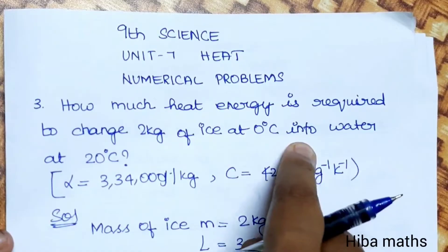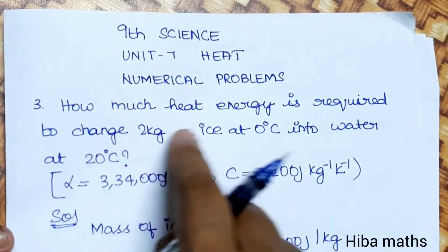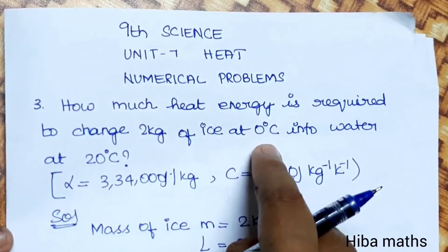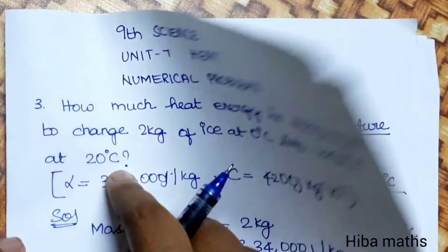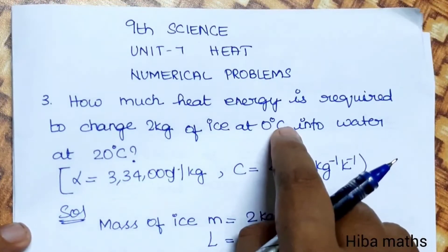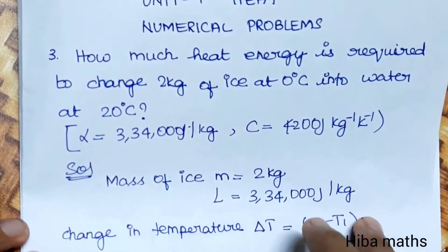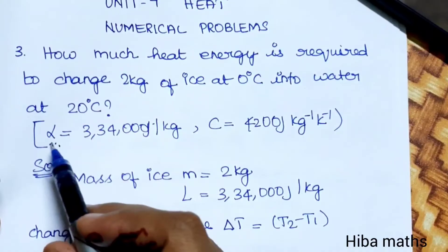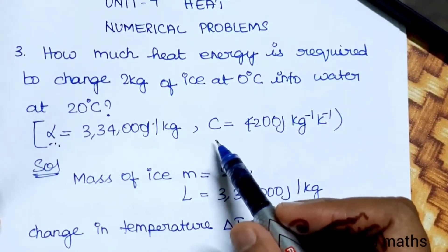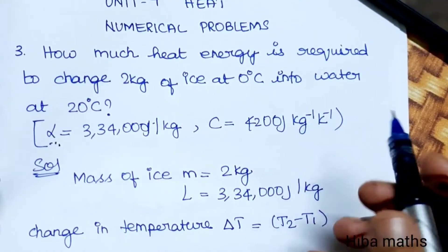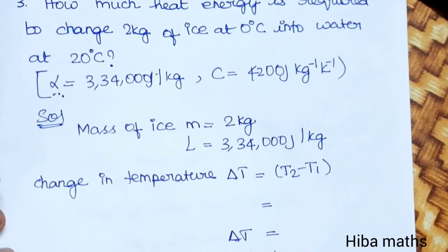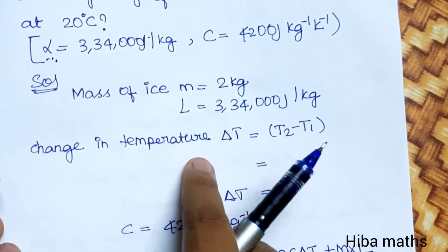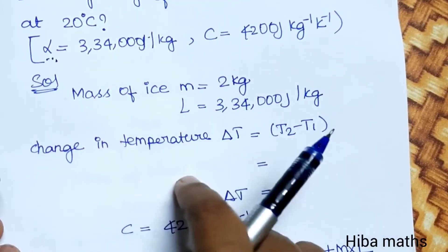Third question: how much heat is required to change 2 kg of ice at 0 degrees Celsius into water at 20 degrees Celsius? We need to find the specific latent heat of fusion of water, denoted L, and the specific heat capacity of water. We will use mass M is 2 kg, latent heat, and change in temperature. The change in temperature is 20 minus 0 equals 20 degrees Celsius.